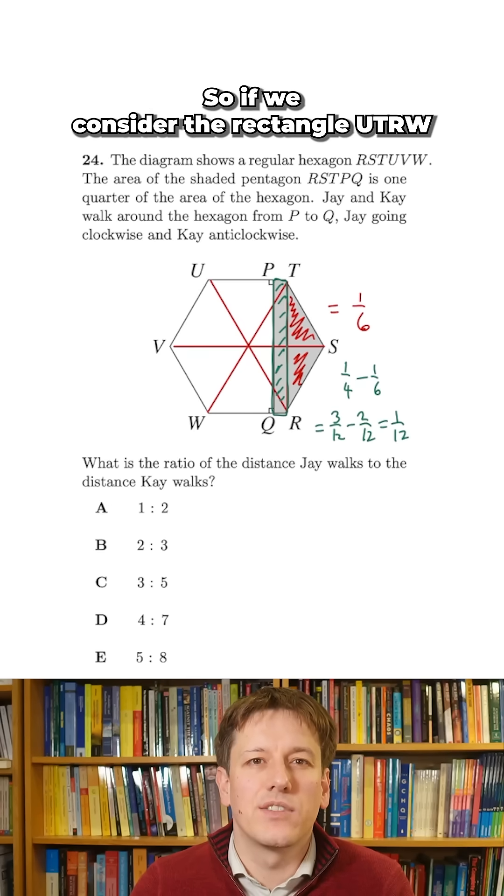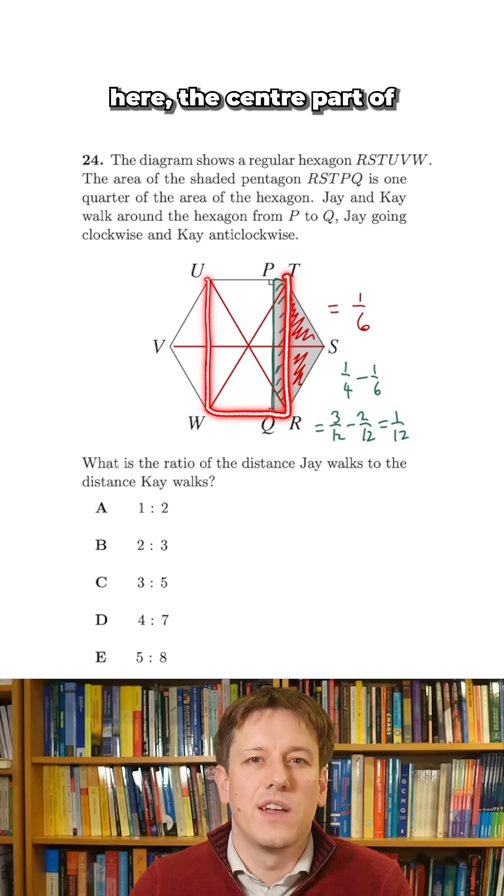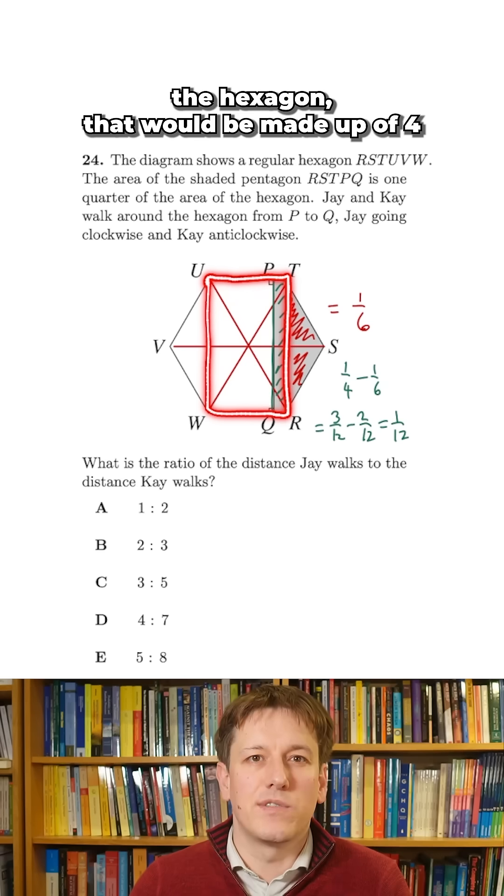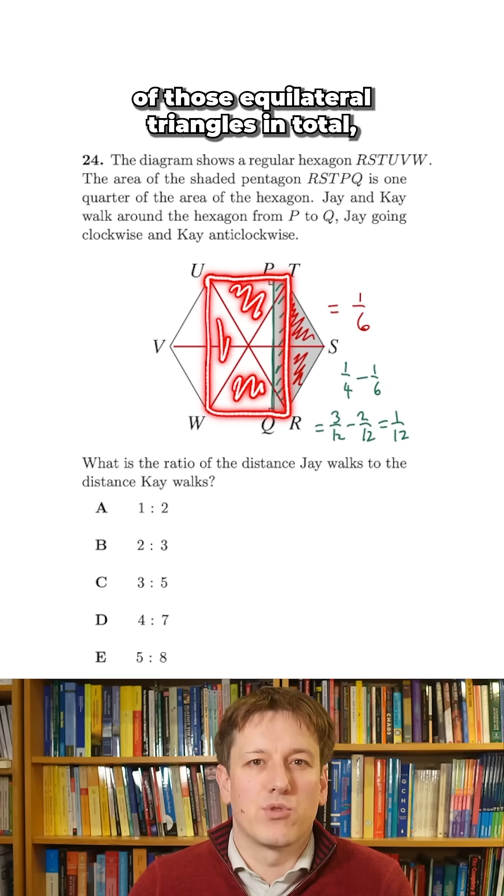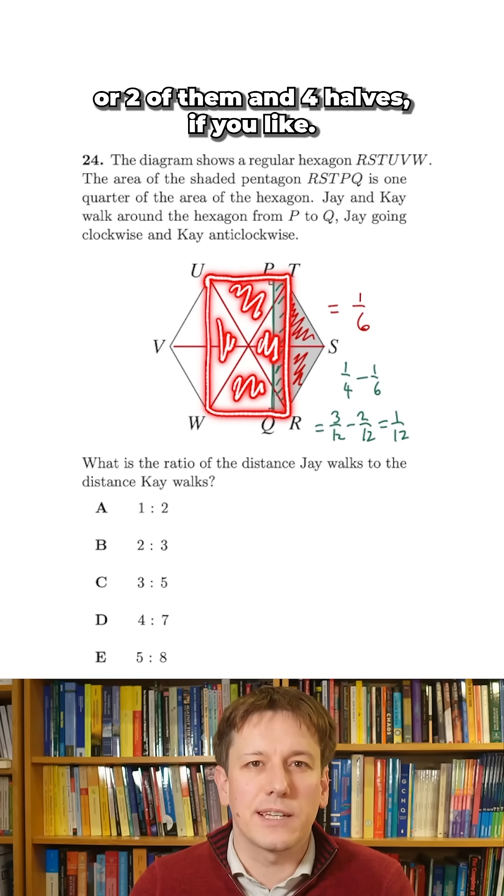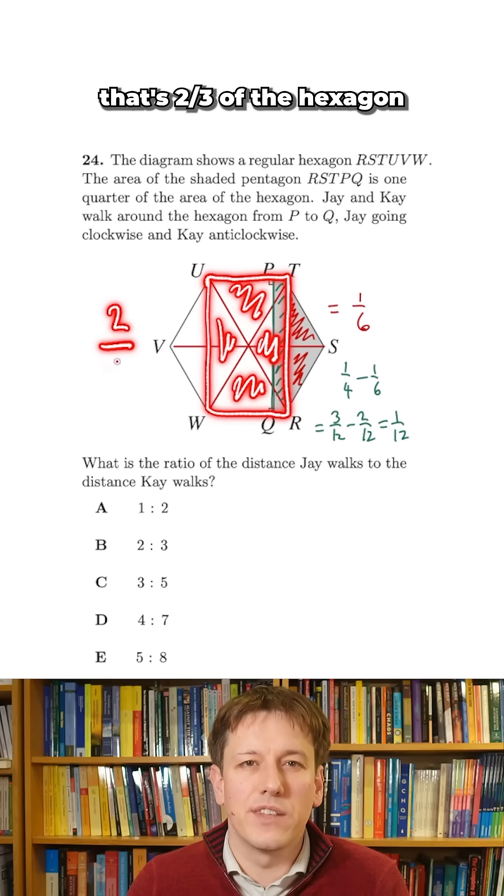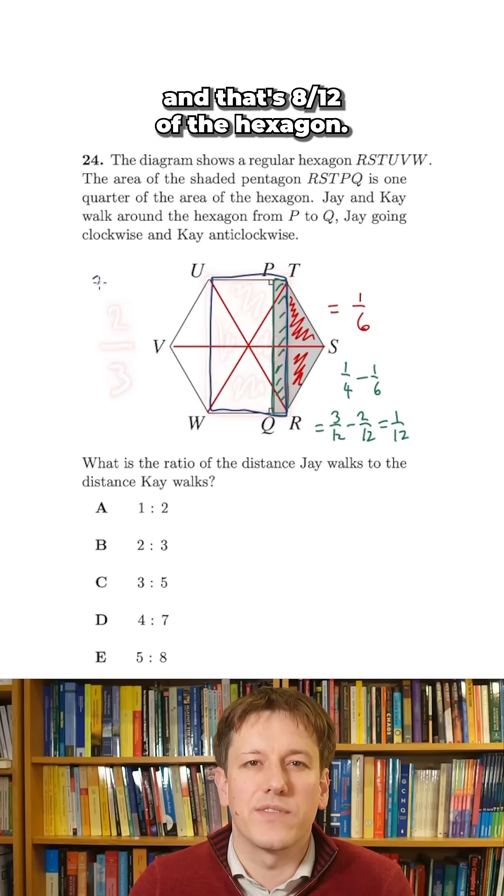So if we consider the rectangle UTRW here, the center part of the hexagon, that would be made up of four of those equilateral triangles in total, or two of them and four halves, if you like. So overall, that's two thirds of the hexagon, and that's eight twelfths of the hexagon.